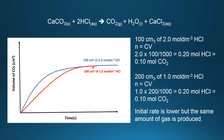Comparing the volume of gas: both the blue curve and the red curve produce the same volume of gas. Calculating the moles: for the blue curve it's 0.10 moles of CO2, and for the red curve it's also 0.10 moles of CO2. So the initial rate is lower for the red curve because it uses a lower concentration of acid, but the same amount of gas is produced in each experiment because the number of moles of CO2 is the same.